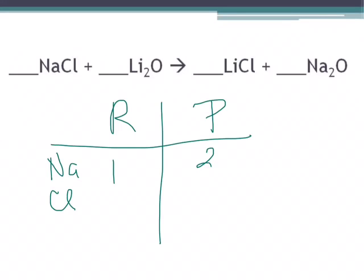For chlorine, on our reactant side we have one, and on our product side we have one. For lithium, on our reactant side we have two, and on our product side just the one. For oxygen, on our reactant side we have one, and on our product side we have one.